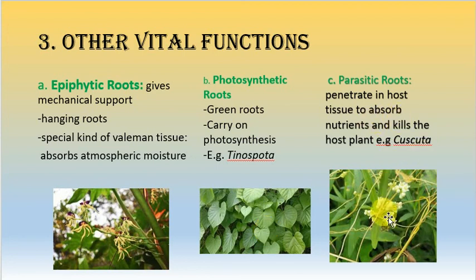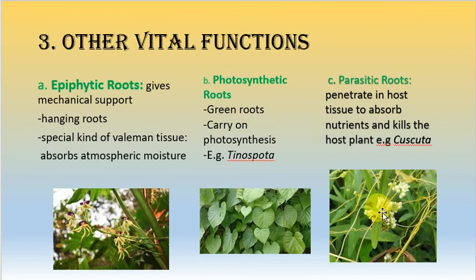The third modification is the parasitic root, with cuscuta as a well-known example. In cuscuta, the major portion of the plant body is a thin and slender stem and root system. Through the root system, it penetrates the host tissue, absorbs all nutrients, and kills the host plant. These are known as parasitic roots. This concludes our study of the functions, types, and modifications of the root system.